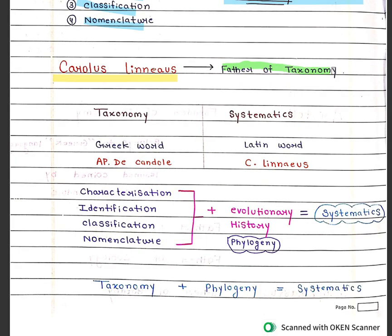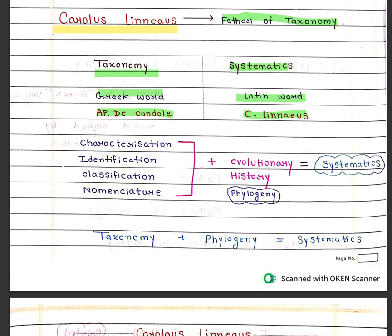Carlos Linnaeus is the father of taxonomy. The term taxonomy was coined by A.P. de Candolle, and systematics is a Latin word termed by Carlos Linnaeus. Taxonomy and phylogeny combine to form systematics.